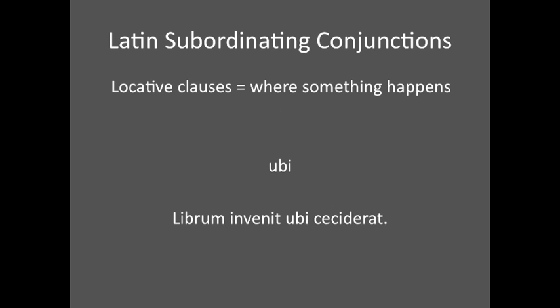Other clauses explain where something happened, and they are introduced by ubi. Librum invenit ubi ceciderat — 'She found the book where it had fallen.' How do we know where the subordinate clause begins? We know because of ubi. Not all subordinate clauses will be marked off by commas, especially if they follow the main clause.